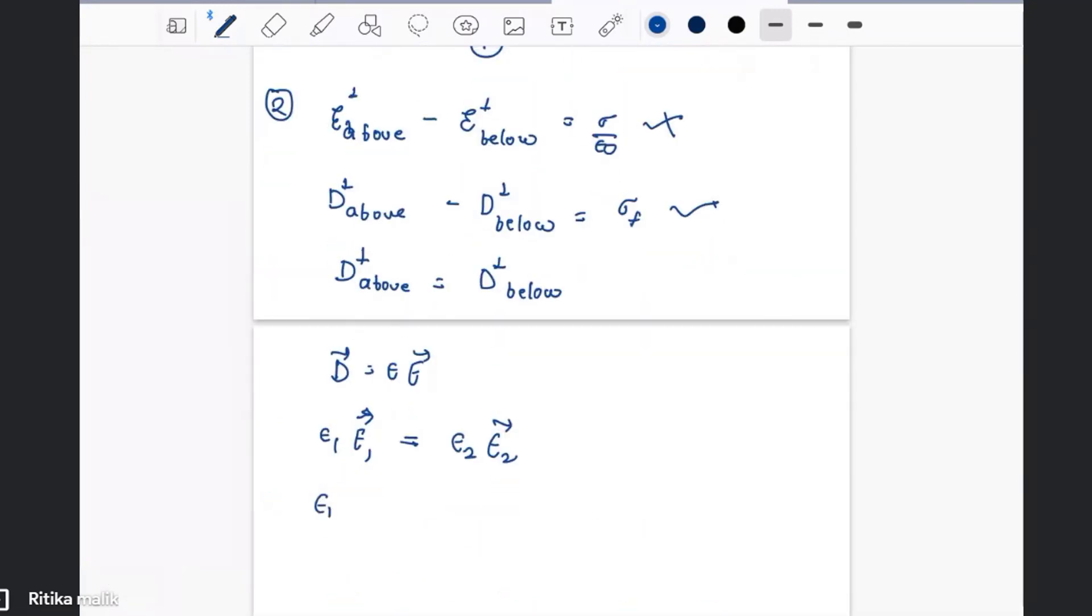equals epsilon 2 E2 cos theta 2. Now this is our second equation.